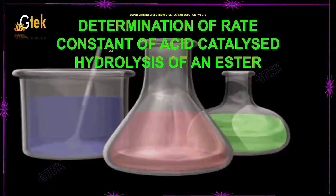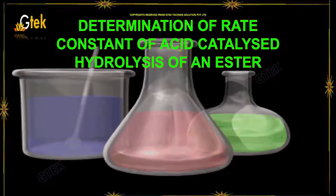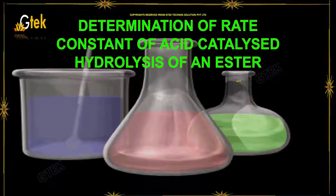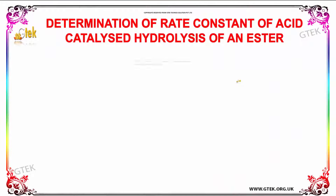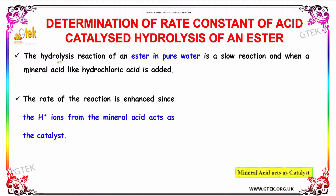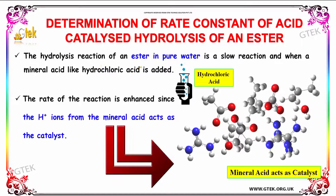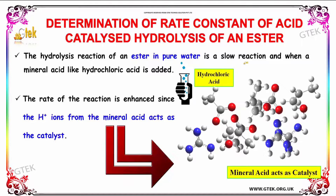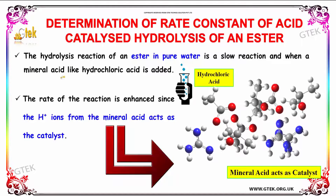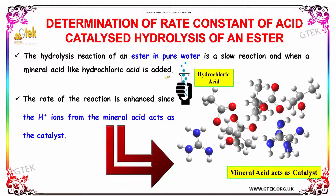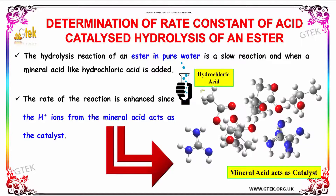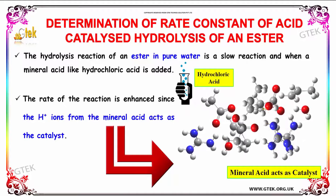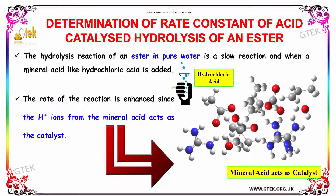This is on the determination of a rate constant of acid-catalyzed hydrolysis of an ester. The hydrolysis reaction of an ester in pure water is a slow reaction, and when a mineral acid like hydrochloric acid is added, the rate of the reaction is enhanced, since the H-plus ion from the mineral acid acts as the catalyst.